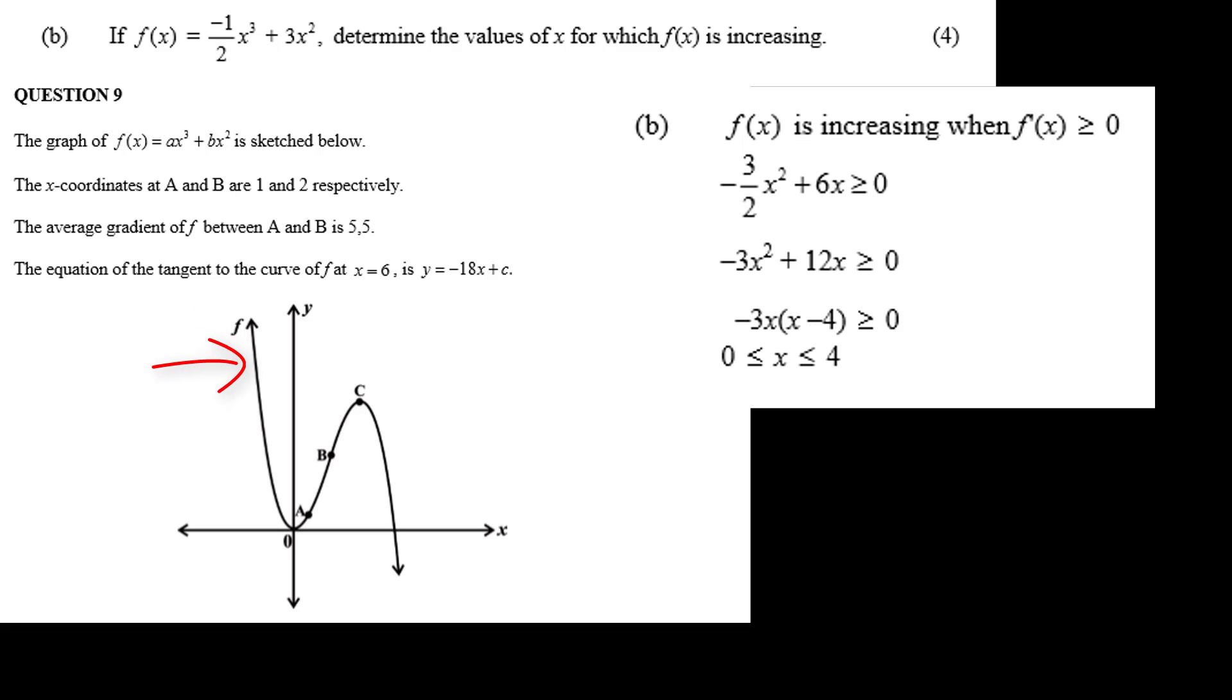It's the x values from 0 to c. From minus infinity to 0, f(x) decreases, and from 0 it increases. At c there's a turning point and there f(x) starts to decrease again. We need to find the x coordinates of c, or where the derivative of x is equal to 0.